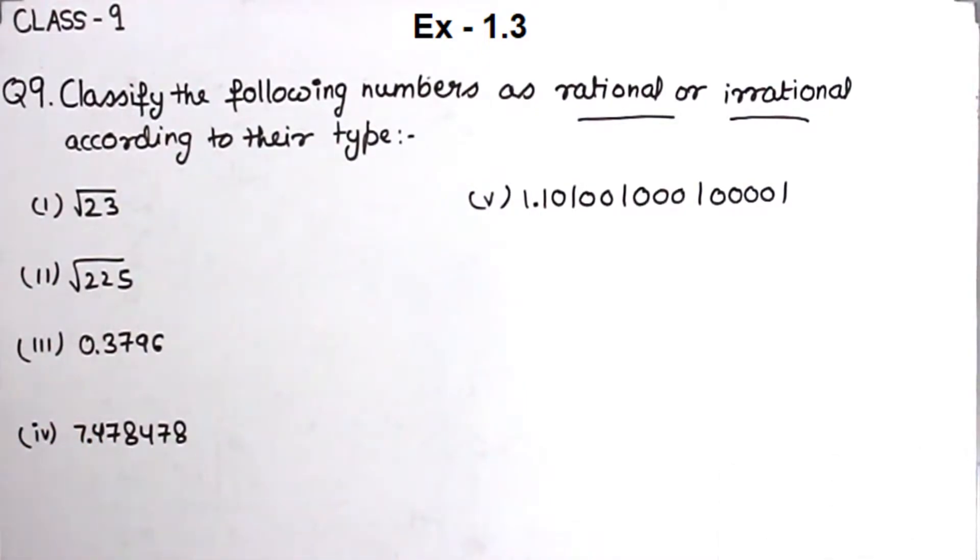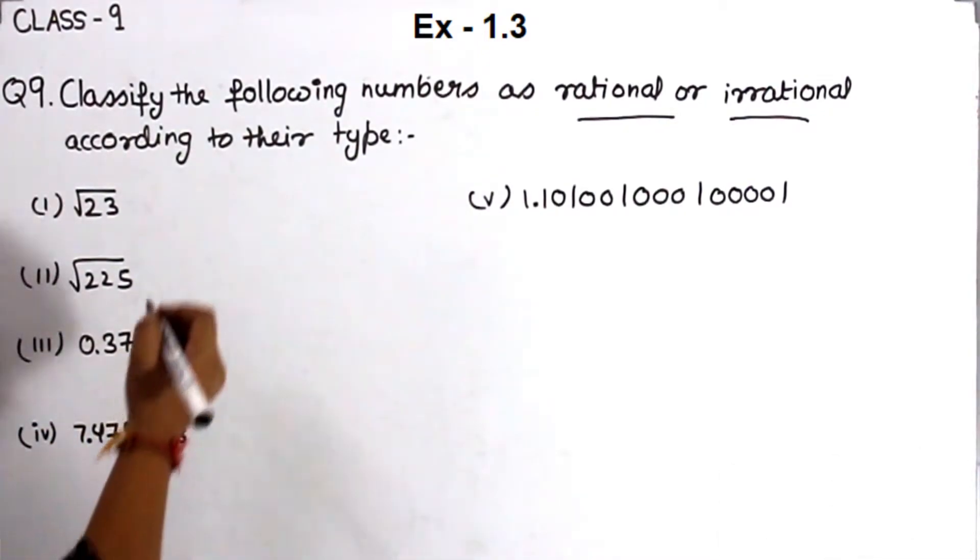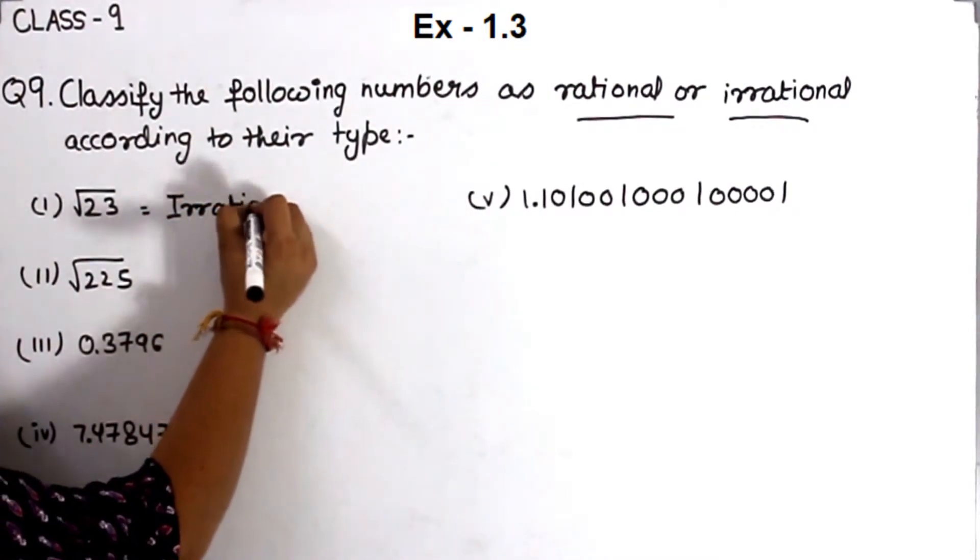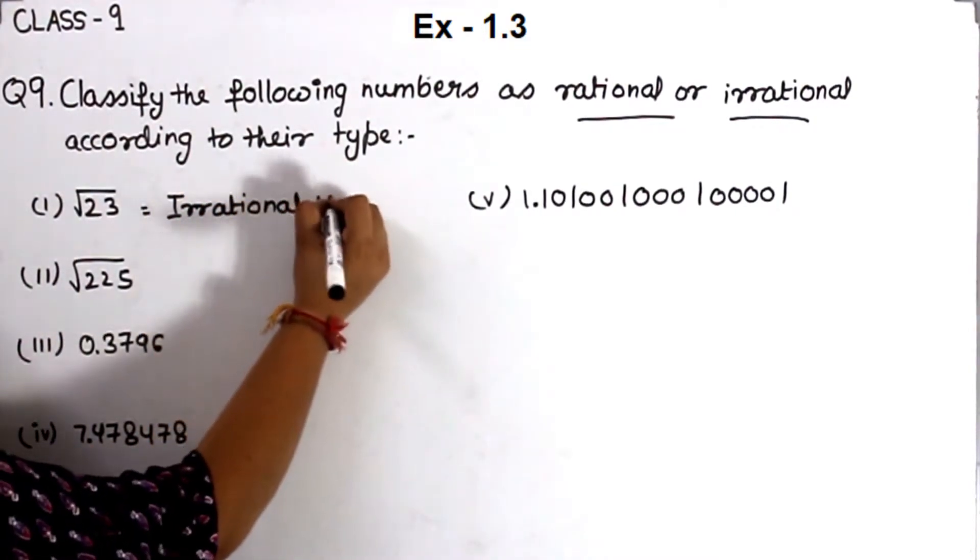Any number which is not a perfect square is an irrational number. So root 50 is an irrational number.